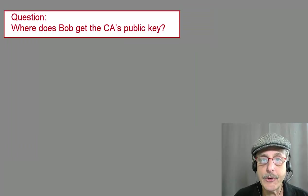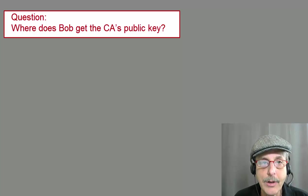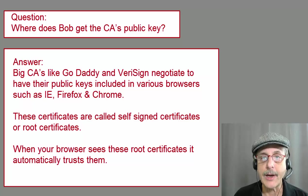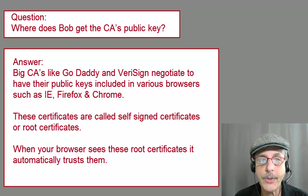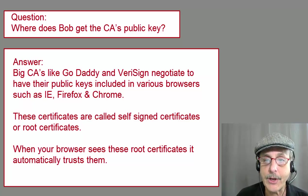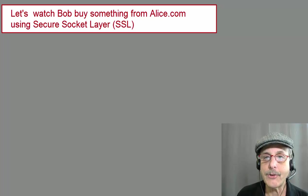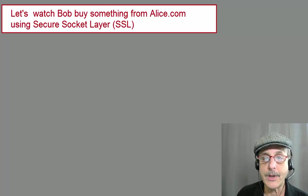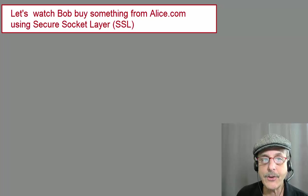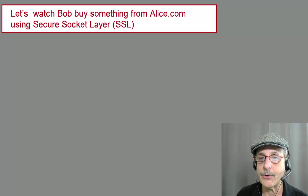There's one question left, and that is, where does Bob get the CA's public key that he needs? Big CAs like GoDaddy and VeriSign negotiate to have their public keys included in various browsers such as Internet Explorer, Firefox, and Chrome. These certificates are called self-signed certificates or root certificates. When your browser sees these root certificates, it automatically trusts them. Now, the protocol that's used is called SSL, which stands for Secure Socket Layer. Actually, SSL is generally now replaced with a more secure TLS, which stands for Transport Layer Security. But SSL and TLS are similar enough that we don't need to differentiate between the two for this tutorial, so we'll just go on talking about SSL.